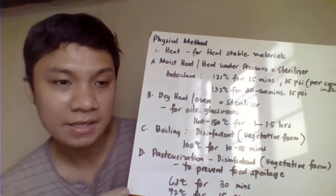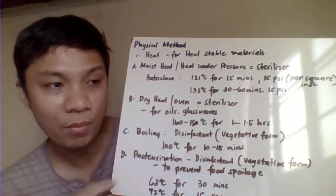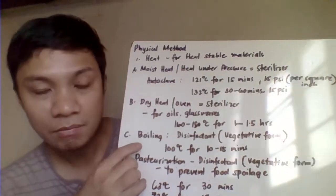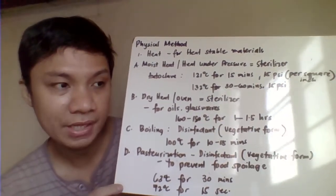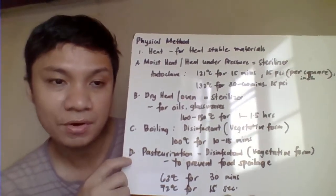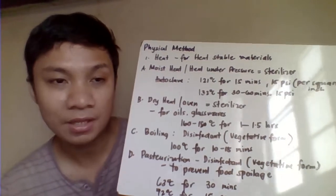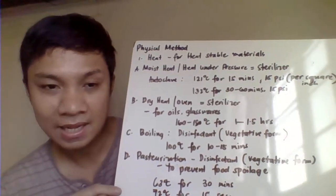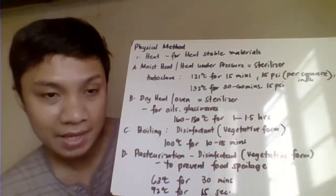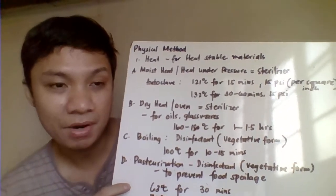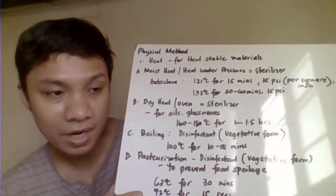Boiling is not a sterilizer — it is limited in what it can kill and is not as effective as dry heat or moist heat. Boiling only kills the vegetative form of microorganisms, not spores. It is done at 100 degrees Celsius for 10 to 15 minutes. Pasteurization is similar — used in food industries to kill pathogens without altering the taste of food. It is also not a sterilizer. Pasteurization can be done at 63 degrees Celsius for 30 minutes or 72 degrees Celsius for 15 seconds.